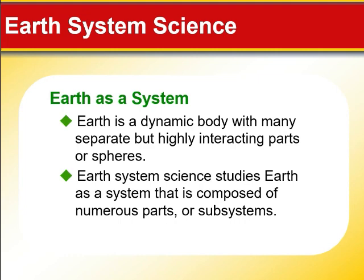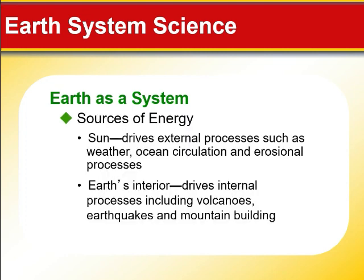Earth as a system has a dynamic body with separated but interacting parts — its other spheres. Earth system science studies Earth as a system composed of numerous parts or subsystems. The major sources of energy of the Earth include: first, the radiant energy from the Sun; and second, the Earth's interior, which drives internal processes including volcanic formation, transformation, tectonics from earthquakes, and the building of mountains.